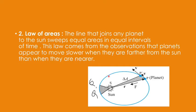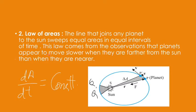In brief, the Law of Areas can be written as dA/dt = constant. It means equal areas are swept in equal intervals of time for any planet moving around the sun.